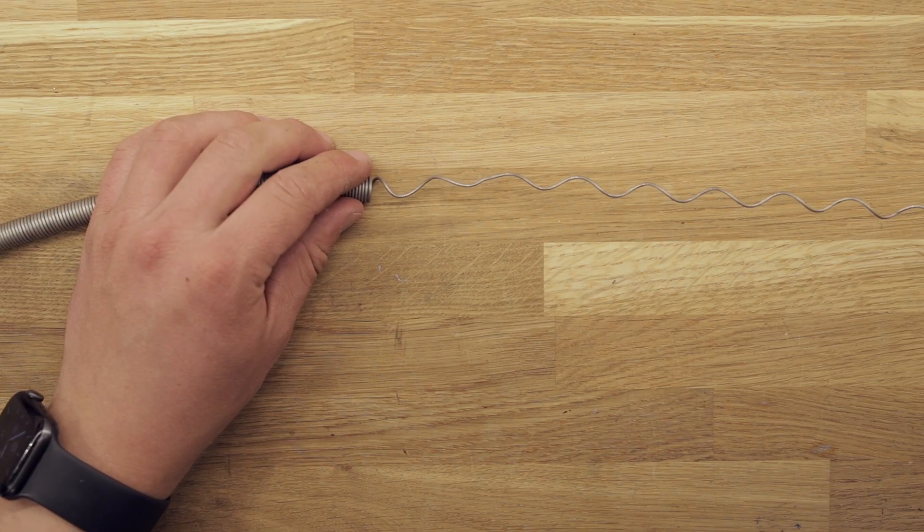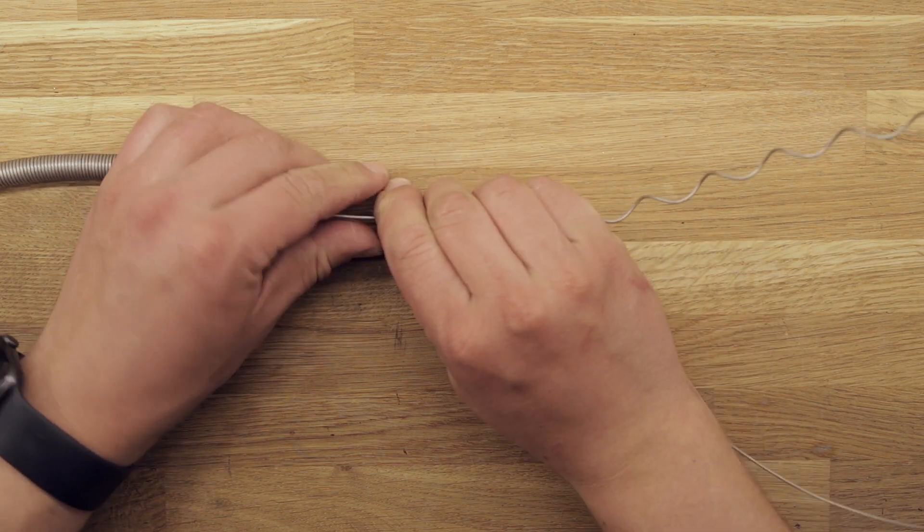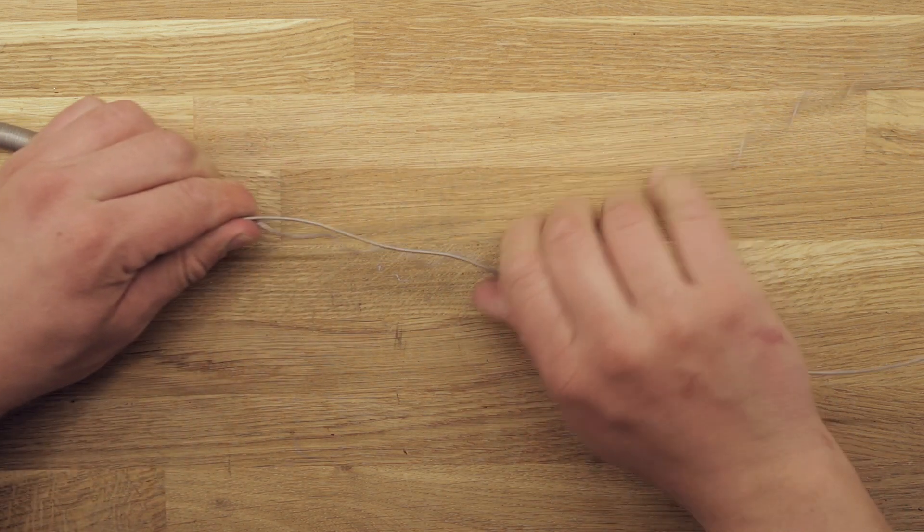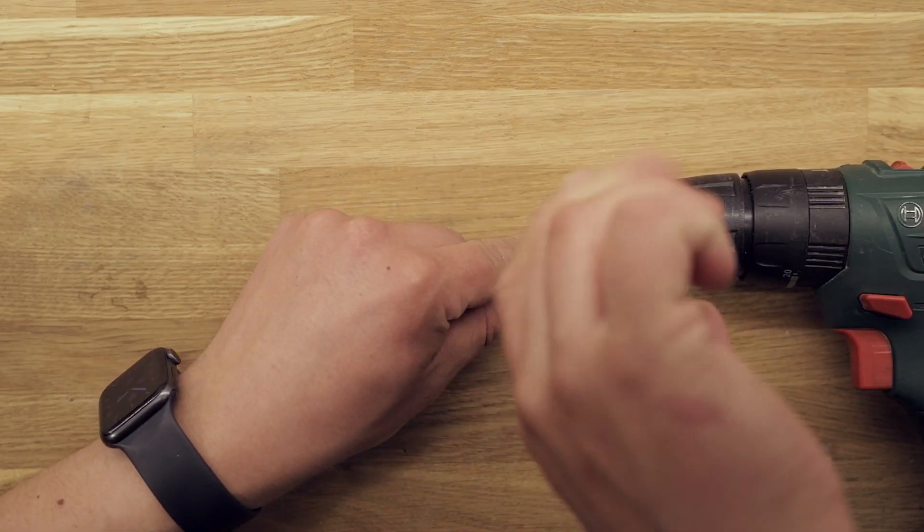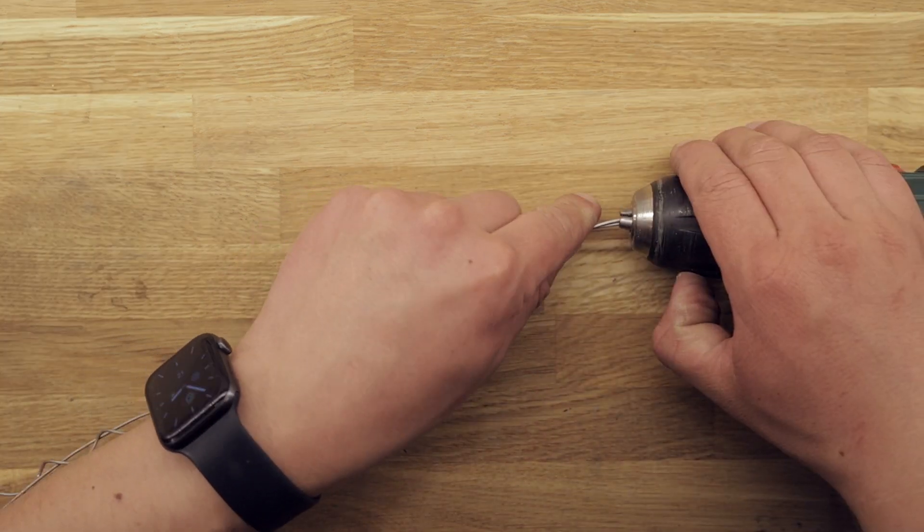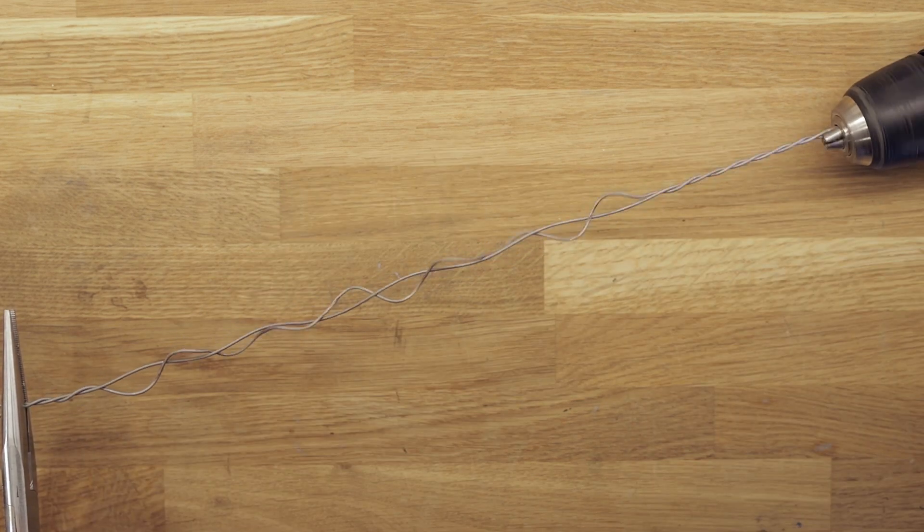Each end of the heating element needs to be twisted to lower its resistance, and thereby making it heat less at the end compared to the main part of the element. This can easily be achieved by folding the wire over itself and inserting it into an electric drill. Until I know how these will be connected, I let them be plenty oversized.